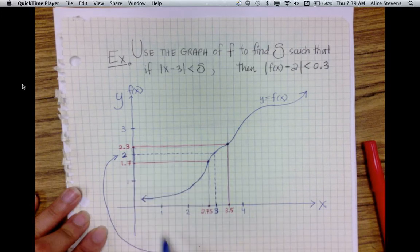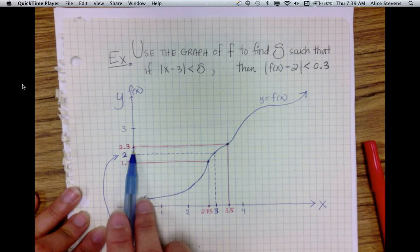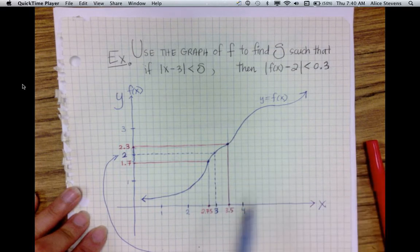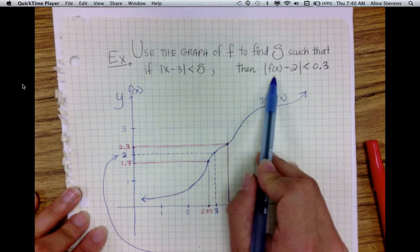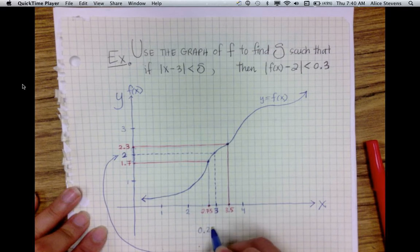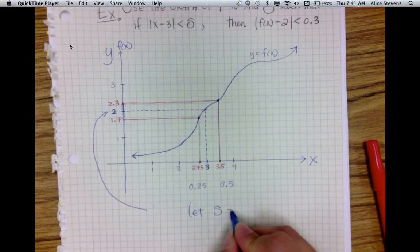For all of the values inside of this interval, the inequality is satisfied. Looking over at the graph and then down, I can see that as long as my x values fall within this area, the inequality will be satisfied. The distance from 2.75 to 3 is 0.25, and the distance between 3 and 3.5 is 0.5.